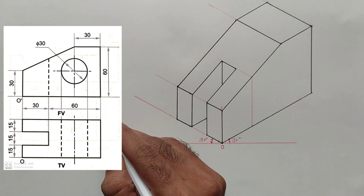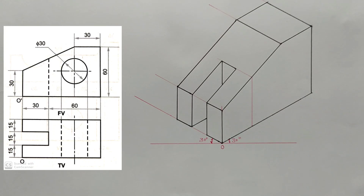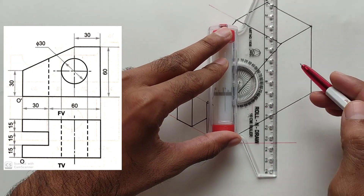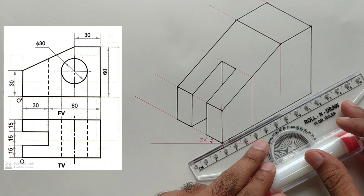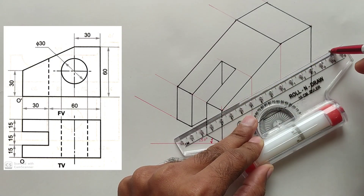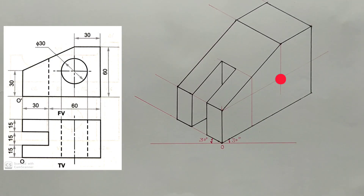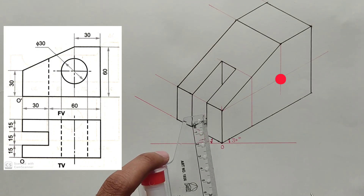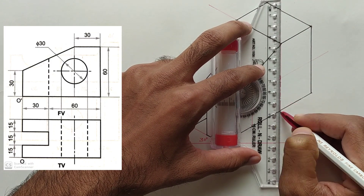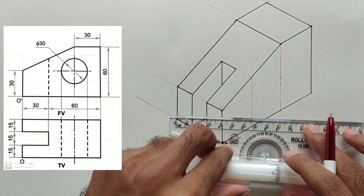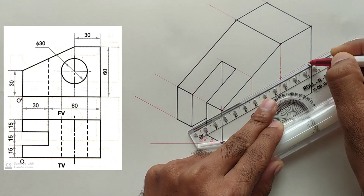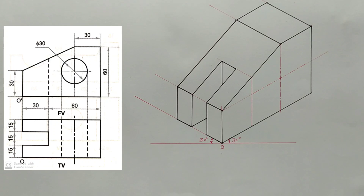Now we will construct an isometric circle which is appearing in the front view. For that, we have to find its center point. Draw the axes — the z-axis and x-axis — through the center point.